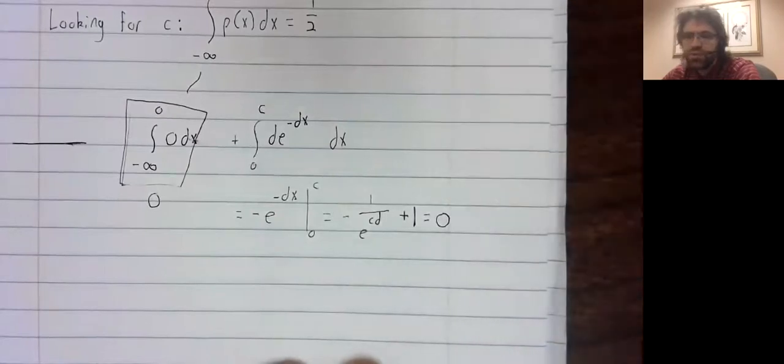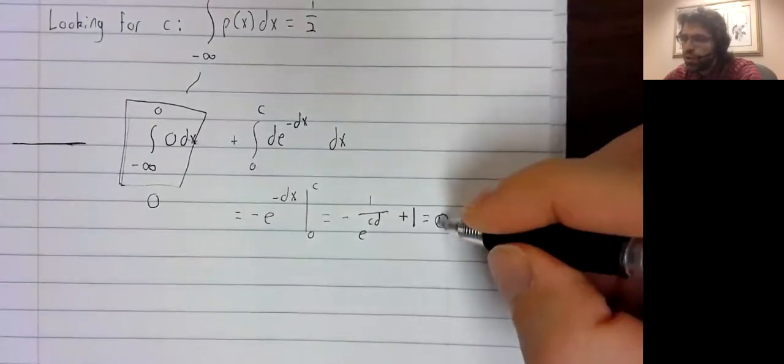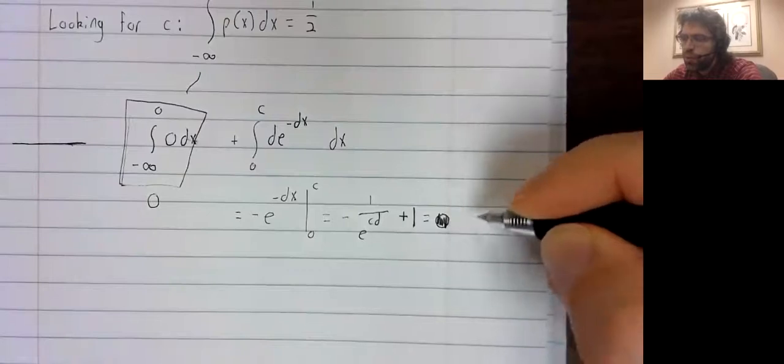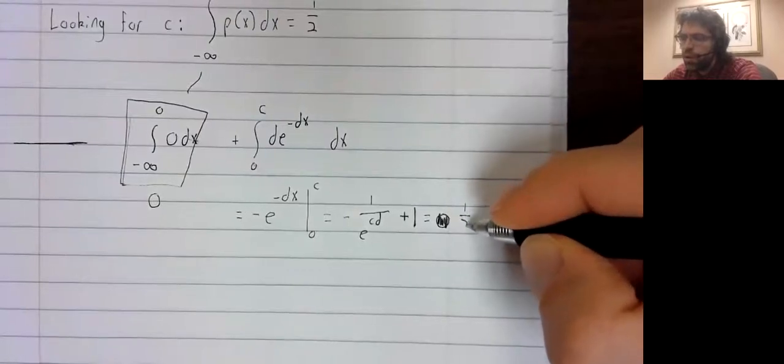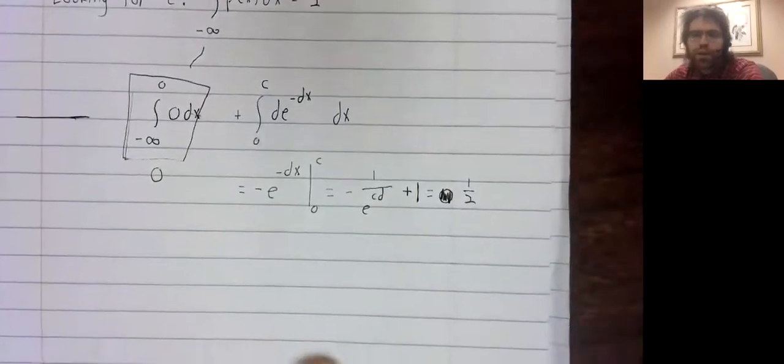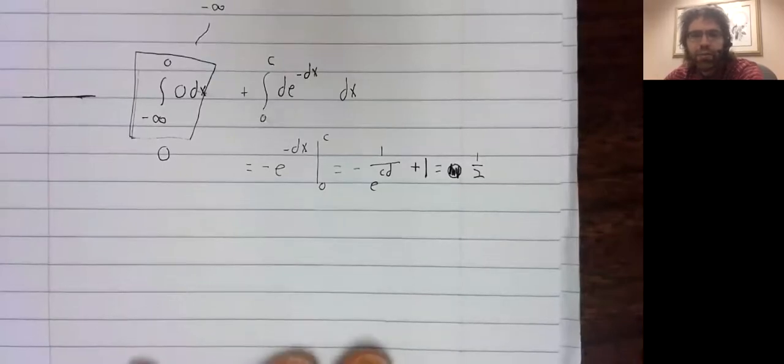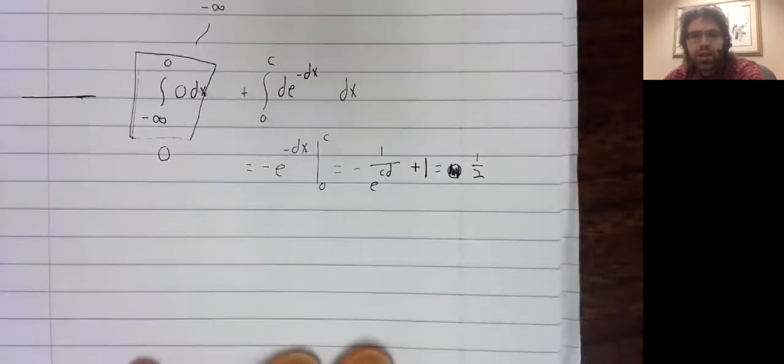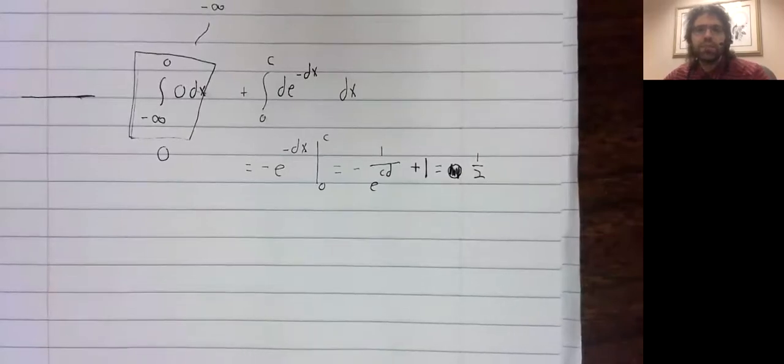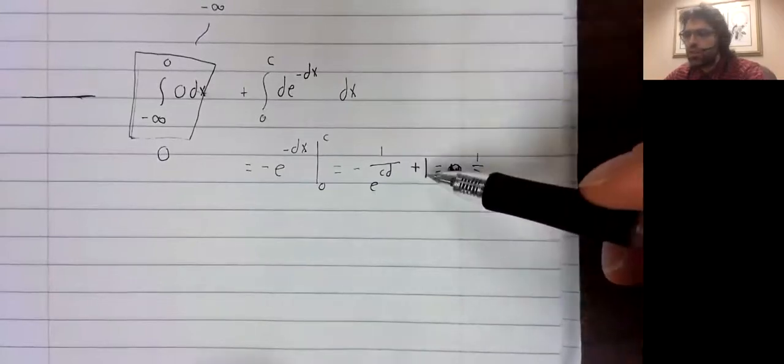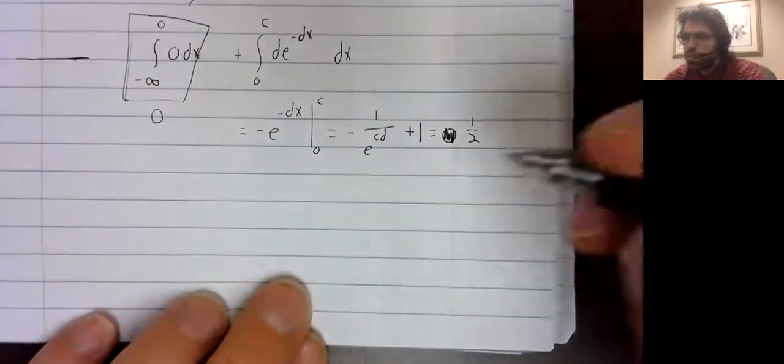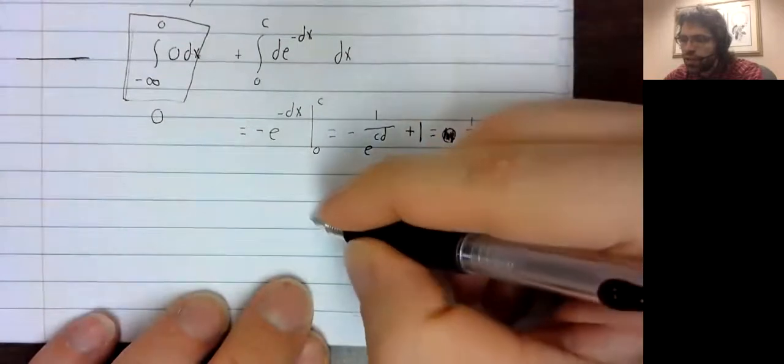This is the integral that we want to equal one half. Let's see. We can subtract one from both sides.